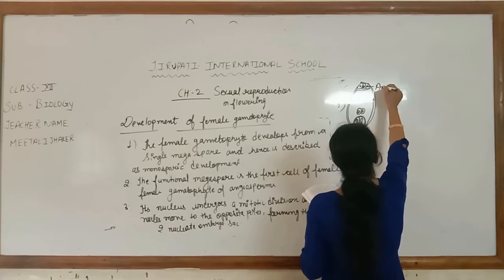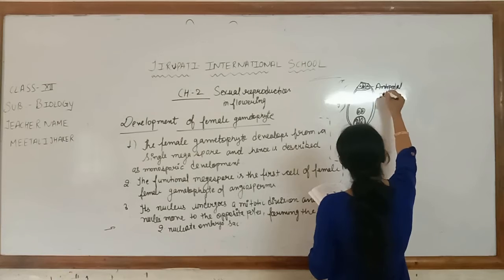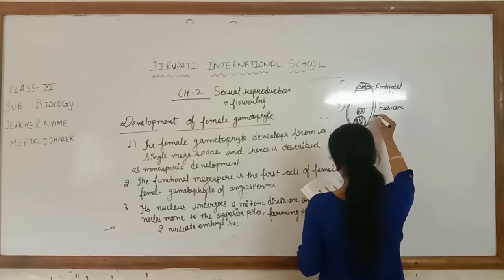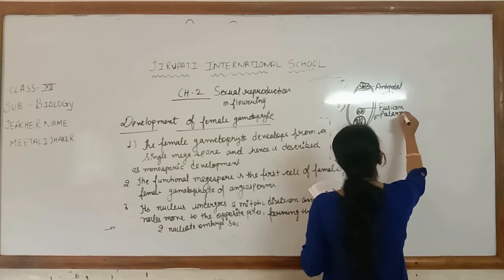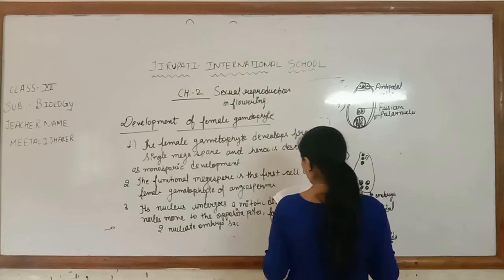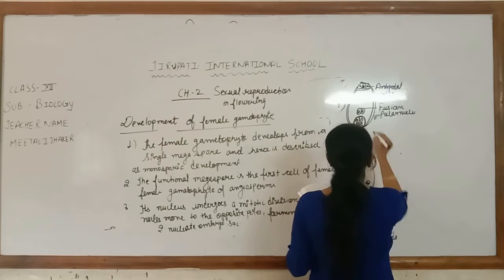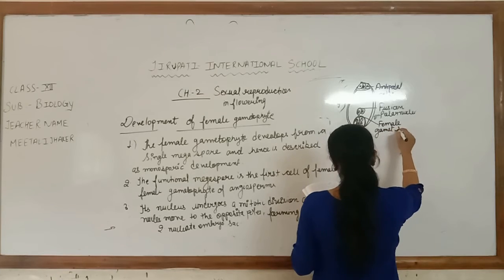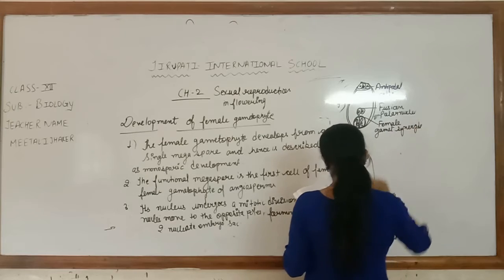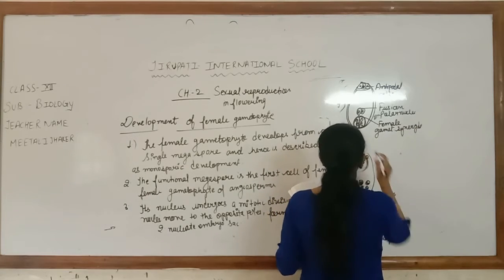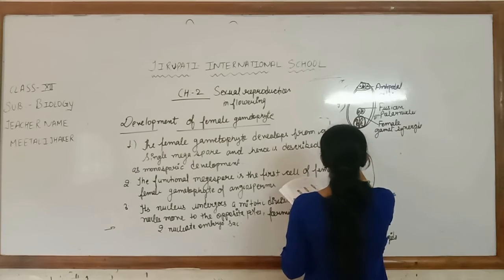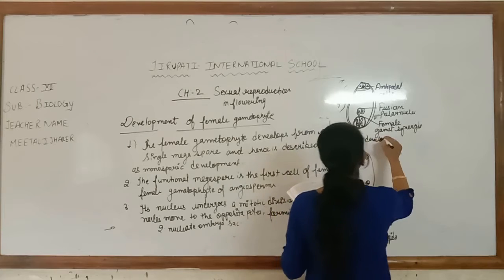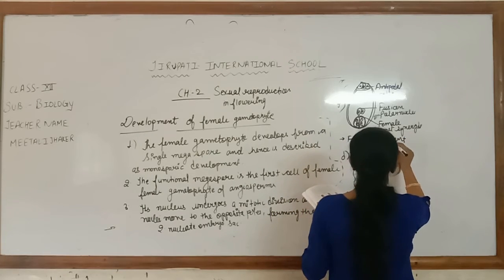In the E step, the eight-nucleate embryo sac has this chalazal pole side converting into antipodal cells, and the lower portion converts into egg and synergids. In step F, this develops into the fully developed embryo sac. The fully developed embryo sac contains antipodal cells, fusion polar nuclei, female gamete synergids, and the egg apparatus.